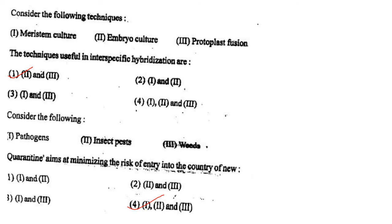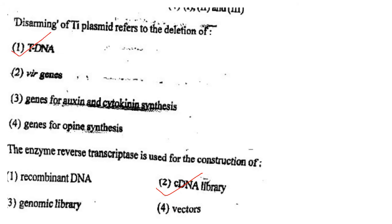Next one: Disarming of Ti plasmid refers to the deletion of option 1, T-DNA; option 2, vir genes; option 3, genes for auxin and cytokinin synthesis; option 4, genes for opine synthesis. Answer is option 1: T-DNA.